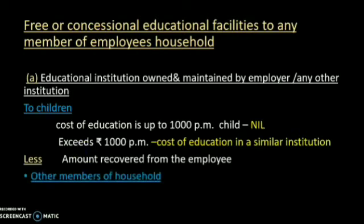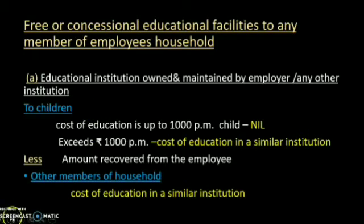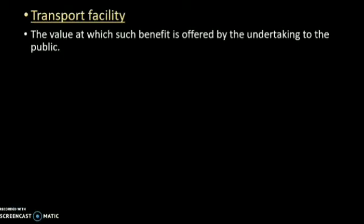For other members of the household, educational facilities can be provided. There is no exemption for other members of the household — the full value is taxable. Regarding transport facility, it is taxable. For railways and airlines, the employer pays the cost; the amount recovered from the employee is deducted, and the balance amount is the taxable perquisite value for the transport facility.